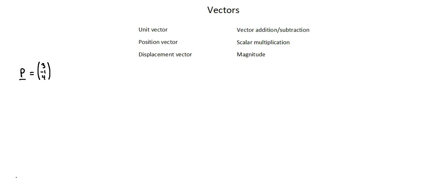In working with vectors in three-dimensional space, unlike vectors in two-dimensional space, the diagramming is a bit difficult, so we're simply going to focus on the numerical analysis. Let's talk about three different types of vectors we'll be working with. We'll skip unit vector for a moment and talk about position vector and displacement vector. In the example of vector P, this is a position vector if our starting point is the origin — a position vector identifies movement from the origin. A displacement vector identifies movement from a starting point that may or may not be the origin. So if this is a position vector, we've moved three positive on the X-axis, one negative on the Y-axis, four positive on the Z-axis from the origin. If it's a displacement vector, then we've moved from some starting point that may or may not be the origin in the same direction.